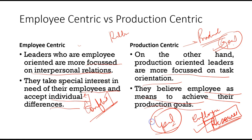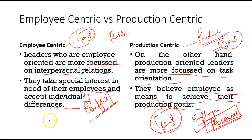Employee-centric leaders, on the other hand, don't bother as much about production goals. They are more concerned about interpersonal relationships — how much trust and respect exists between them and their followers. They focus on these things rather than focusing on the task.